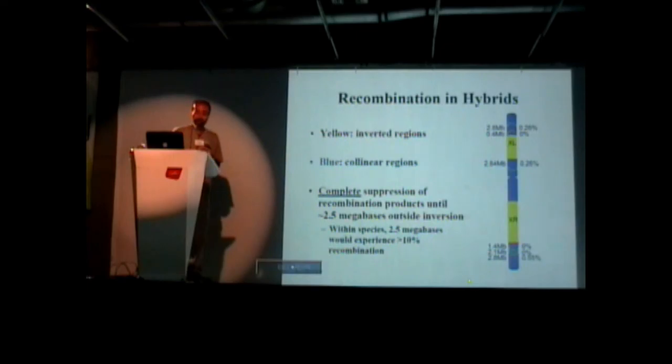So we looked at recombination in hybrids. This is now looking at the X chromosome. Yellow parts here are the inverted regions, and blue are regions that are not inverted. My student Lori Stevenson, who just graduated, looked to see how much recombination you had as you get further away from the inversion. What she found is that you have complete suppression of recombination, no recombination at all until about 2.5 megabases away from the inversion.